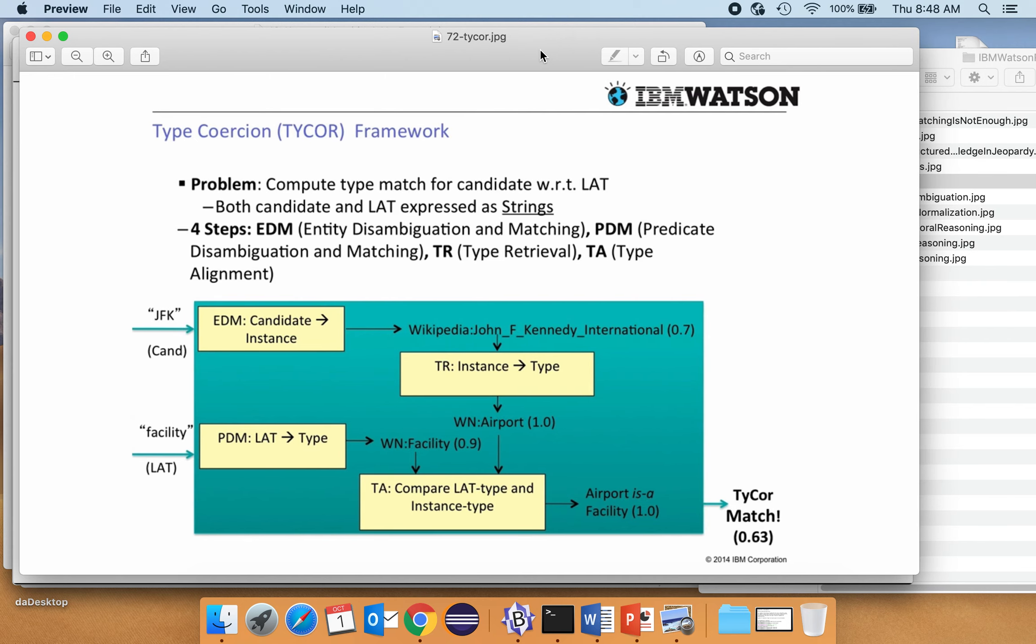So here is what they call the type coercion framework. So you have different types, it's like trying to figure out how well do they match. And so suppose we have a candidate answer for something, it doesn't matter what it is, and we have JFK, and we have facility. And so they're trying to figure out, do they match? So as it turns out, there's John F. Kennedy International Airport. And so they figure out that they match this one here to the airport, and the International Airport is a direct match for airport.